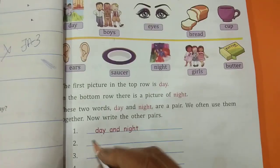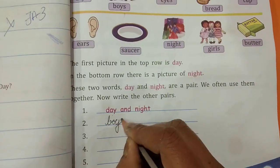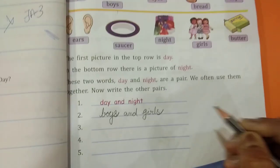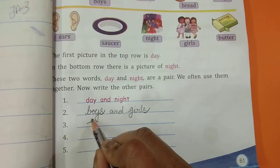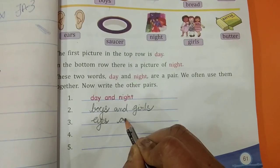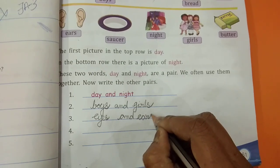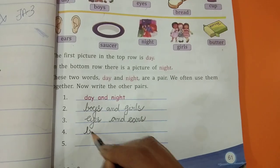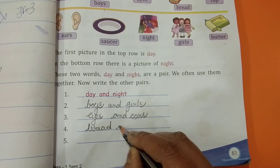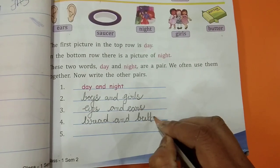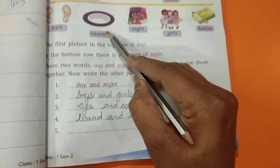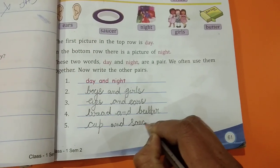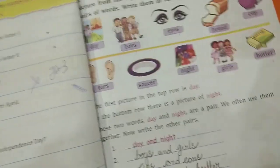Boys, girls. Write here. Boys and girls. Eyes, ears. Eyes and ears. Next, bread and butter. B-U-T-T-E-R. Next cup, saucer. Cup and saucer. You already learned in preschool, right children? These are the pairs. Very easy.